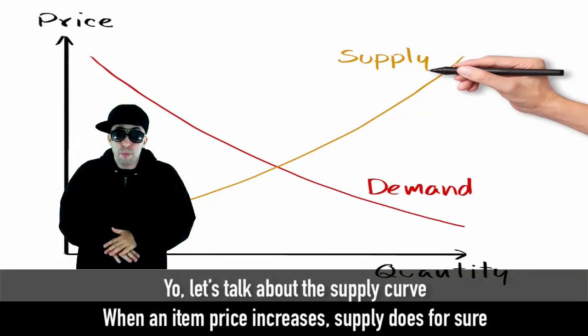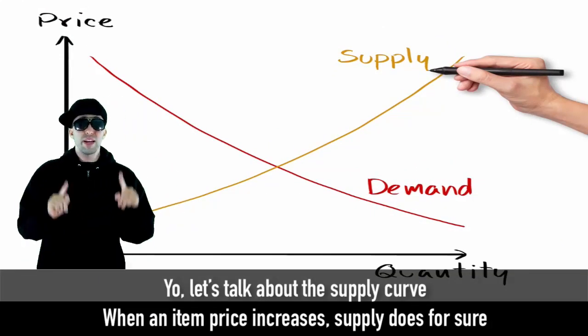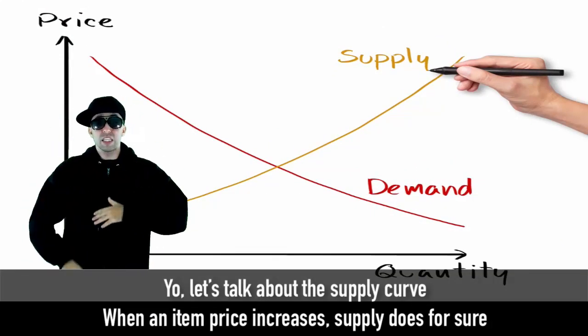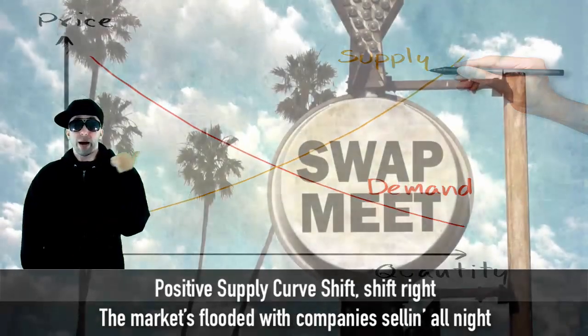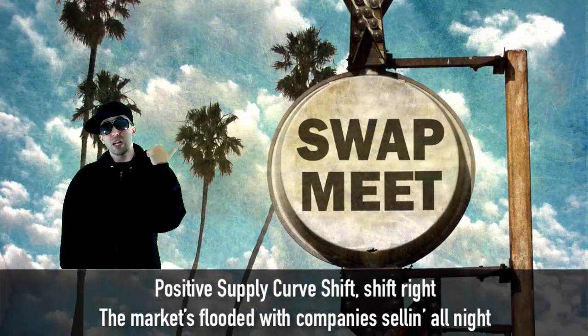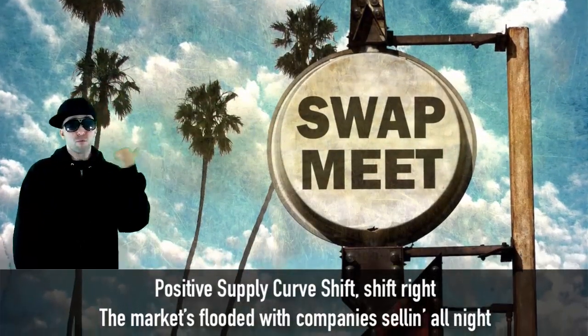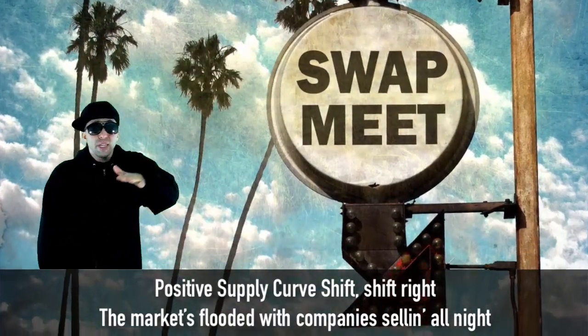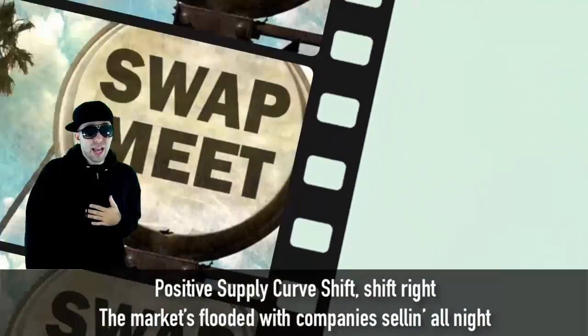Let's talk about the supply curve. When an item price increases, supply does for sure. Positive supply curve shift — shift right. The market's flooded with companies selling all night.